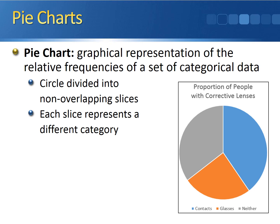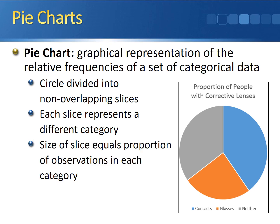Each slice of the pie represents a different category, just as a bar graph has a different bar for each category. The size of the slice equals the proportion of observations in each category. Since contacts represent the mode, they have the largest slice. Glasses have the smallest slice at 25%, and neither is in between. Always include a key — in this case, contacts is blue, neither is gray, and glasses is orange.